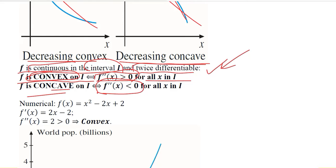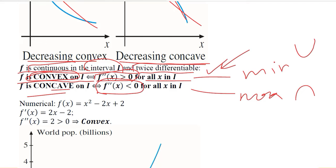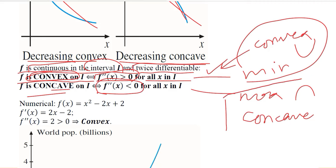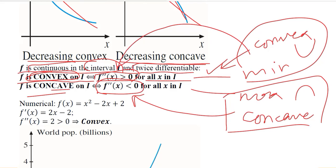As we know, a minimum occurs when we have a convex diagram and a maximum occurs when we have a concave diagram. So all these concepts come into coherence: when we have a maximum, we have a second order derivative which is negative; when we have a minimum, we have a second order derivative which is positive.